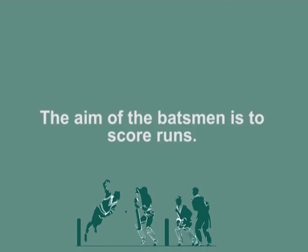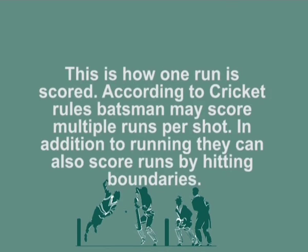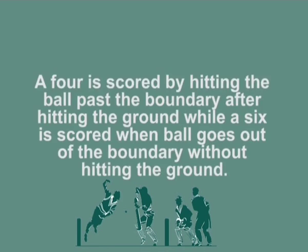The aim of the batsman is to score runs. One of the main cricket rules is that for batsmen to score runs, they must run to each other's end of the pitch — from one end to the other. This is how one run is scored. Batsmen may score multiple runs per shot. In addition to running, they can also score runs by hitting boundaries. A boundary scores the batsman either four or six runs. A four is scored by hitting the ball past the boundary after it hits the ground, while a six is scored when the ball goes out of the boundary without hitting the ground.